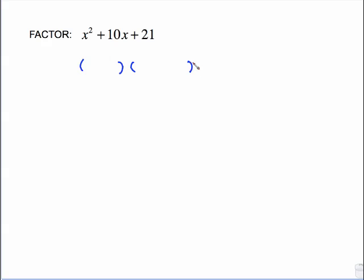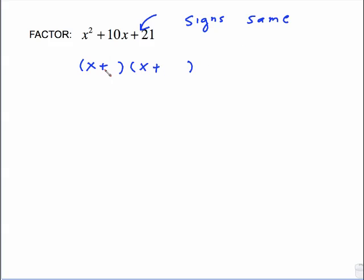At any time on these videos, you can stop, try to factor it yourself, and then listen to my explanation. Start with x and x. Middle sign automatically comes down to the first parentheses. The last sign is positive, so I know the signs in the parentheses will be the same — the only way to get a positive product. So that's positive, and since I know the signs are the same, the second is also positive. What multiplies to 21 and adds to 10 would be 7 and 3.